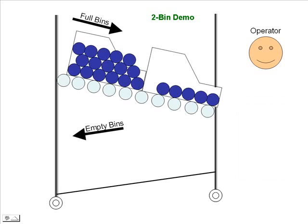First, let me tell you what we're looking at here before we do the animation. We're looking at an operator standing by a flow rack, or a gravity-fed flow rack, whatever you want to call it. There are rollers that the bins sit on that naturally use the force of gravity to draw the bins down closer to the operator. The operator has been consuming out of the bin closest to them and they're getting close to the end. You'll also notice there's a full bin of parts behind the mostly empty bin — that's the next one the operator will be consuming.